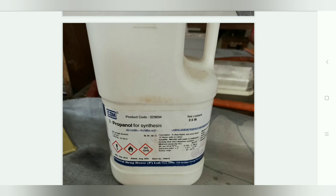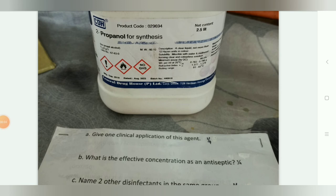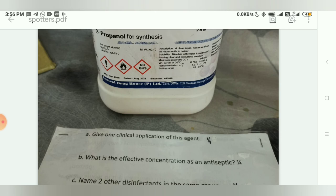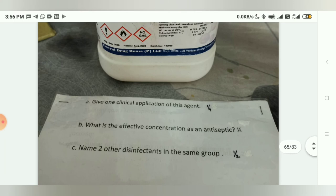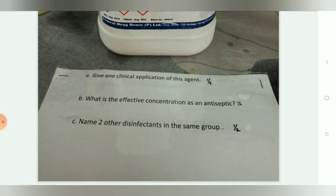The next spotter is propanol. It is used as a bactericidal and fungicidal agent but not sporicidal. The effective concentration as an antiseptic is 70 to 80%. Other disinfectants in the same alcohol group include ethanol and isopropyl alcohol.